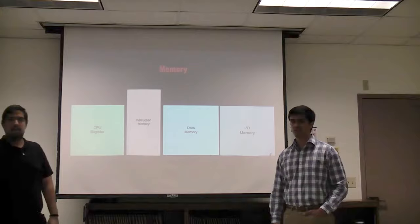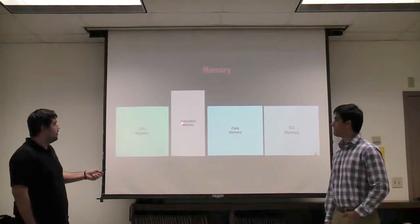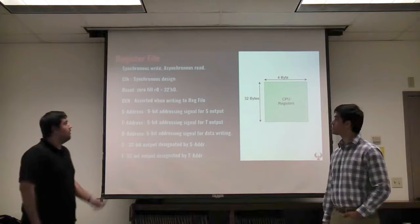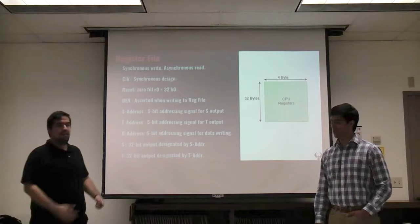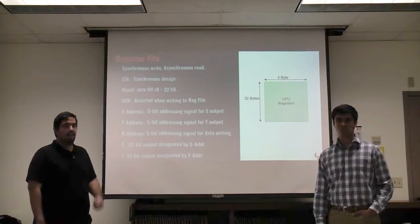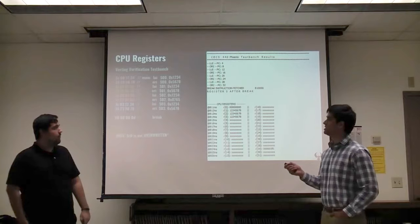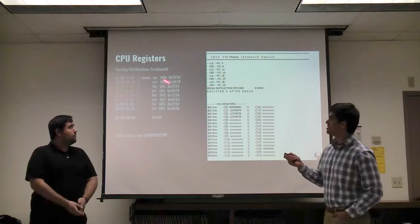Now we can talk about the memory part of the MIPS. We have four different memory blocks: the register file, the instruction memory, the data memory, and the IO memory. The register file is 32 by 32 wide, used for source and writing inside the integer data path. Next we'll be talking about the test bench verification of reading and writing to the CPU registers.